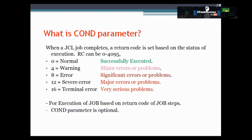Today's topic is the COND parameter. The COND parameter, or condition parameter, is an optional parameter which can be coded at the job or EXEC statement in JCL. Basically, the COND parameter is used to test the return code or codes of a preceding job step or steps, and it decides whether the following step will be executed or bypassed based on the condition code and return code of the previous step. The return code of a step can vary from 0 to 4095, where 0 means successful execution, 12 means severe error, and 16 means terminal error.